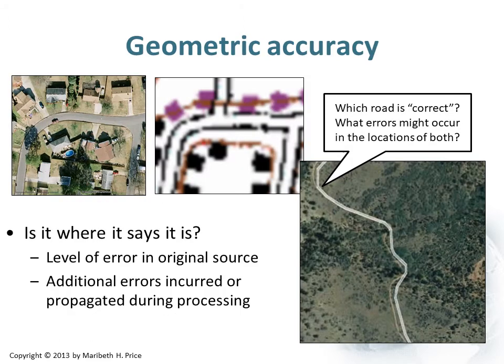There are different types of accuracy. One of the big ones is geometric accuracy — really nothing more than whether something is where it says it is. There's a certain amount of error in the data depending on how it was collected, and then there are other errors that occur as it's processed. A lot of times these errors propagate during further processing, so small tiny errors at some point become larger and larger the more you do with the data.